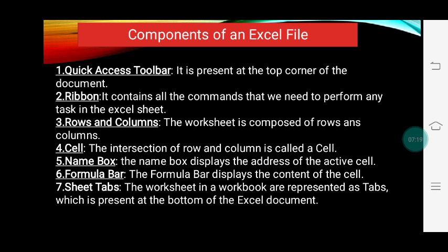Now, components of an Excel file. First is the Quick Access Toolbar, which is present at the top corner of the document. It consists of icons of common commands like Save, Undo, and Repeat. Users can add more buttons to the Quick Access Toolbar according to their requirement. Second is the Ribbon — the strip of buttons and icons located above the worksheet. It contains all the commands needed to perform any task in Excel. The ribbon consists of many tabs, where each tab is a collection of groups of commands.